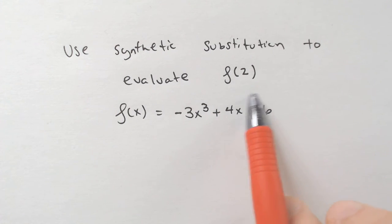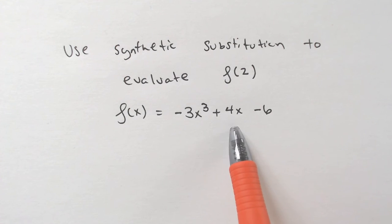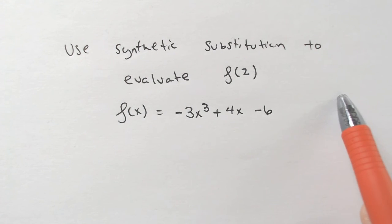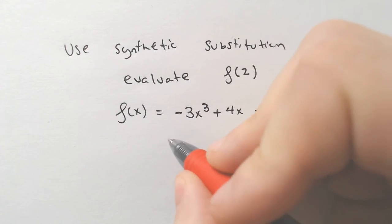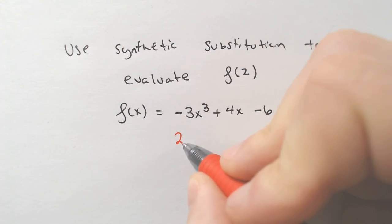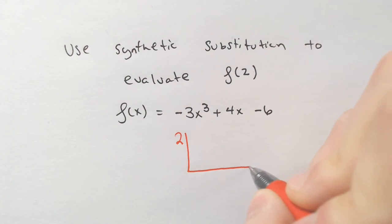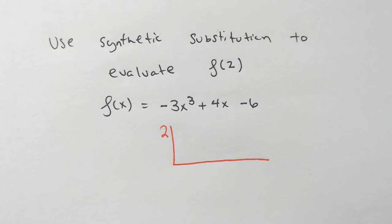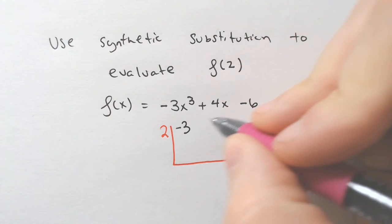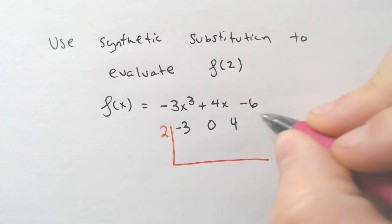So f of 2 means that you could plug in 2 for this x and this x, and then you could get an answer. But synthetic substitution means that you take this number without changing the sign and put it on the outside of your synthetic division.